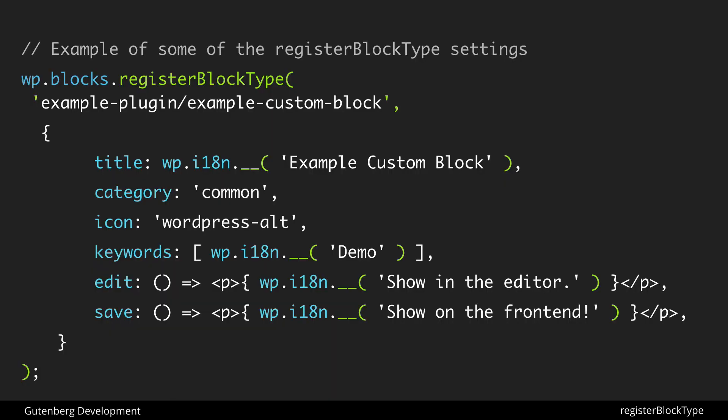Looking at this code sample, you can see all of these in action. The title is localized through wp.i18n.__ to make it translatable — in this case 'Example Custom Block'. The category is 'common', which is the default. The icon is a dashicon — in this case a WordPress icon. Keywords include 'demo', so searching that word surfaces the block even though it's not in the title. The edit and save properties here are simple: a paragraph saying 'shown in the editor' and one saying 'shown on the front end'.